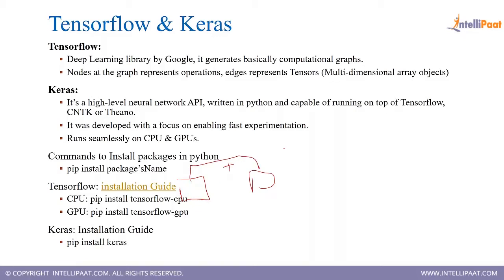Nodes in the graph represent operations. This is your node, represents the operation actually, what you are doing. And edges represent the tensors. These are the edges, these represent the tensors.